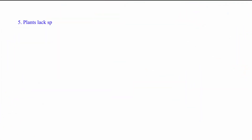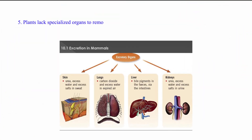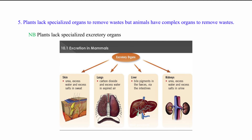Five: plants lack specialized organs to remove wastes, but animals have complex organs to remove wastes. NB: plants lack specialized excretory organs because they produce waste in small amounts; they reuse their waste.